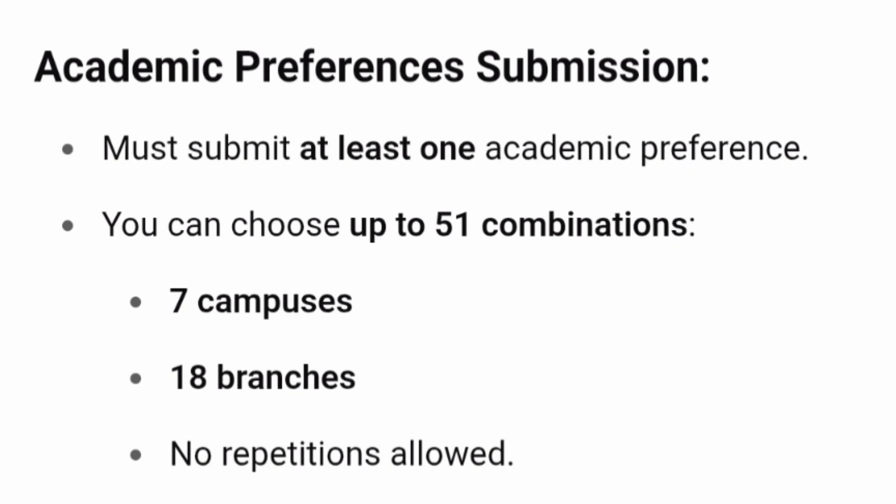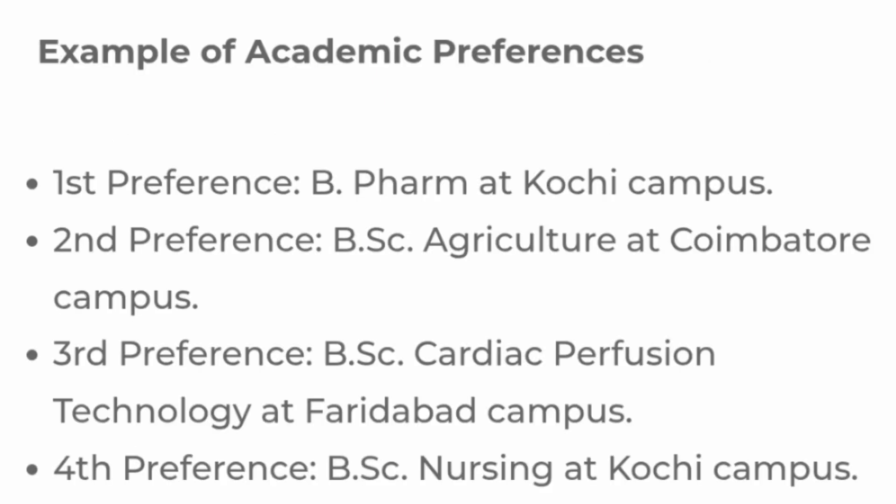Now, academic preference submission. You can choose up to 51 combinations — that is the maximum limit a student can put. There are 7 campuses and 18 branches available; within that you can put 51 combinations. Academic preference means course and campus combination — for example, BSc Cardiac at Faridabad, BSc Agriculture at Coimbatore campus, B Pharma at Kochi Amritapuri campus, and so on. It does not include any fee slab information. You can make 51 such combinations without selecting any slab.